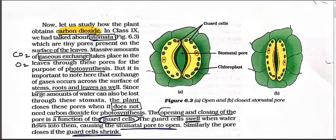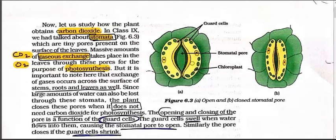Now let's study how the plant obtains carbon dioxide. In Class 9 we talked about stomata - tiny pores present on the surface of leaves. On the surface of leaves there are very small holes. Massive amounts of gaseous exchange - carbon dioxide and oxygen - take place in the leaves through these pores for the purpose of photosynthesis. Plants do photosynthesis only through the chlorophyll parts of leaves, so carbon dioxide is taken in and from the same stomata, oxygen is released outside.